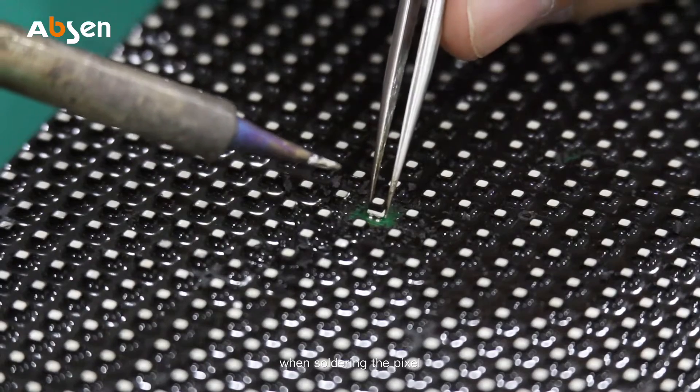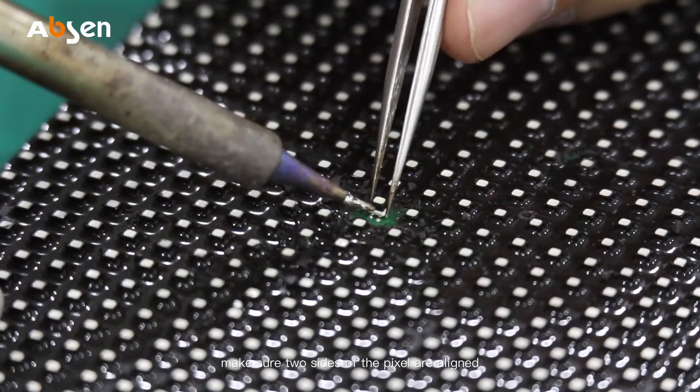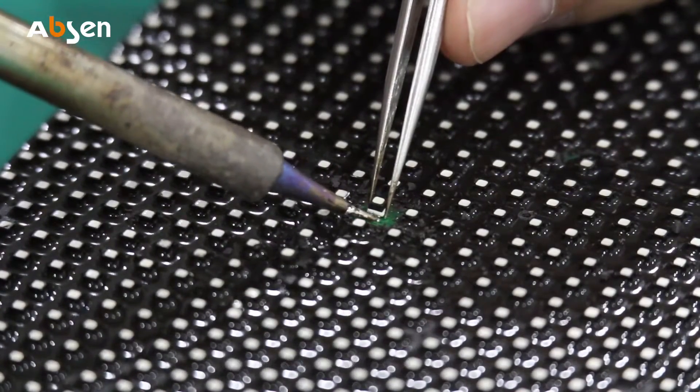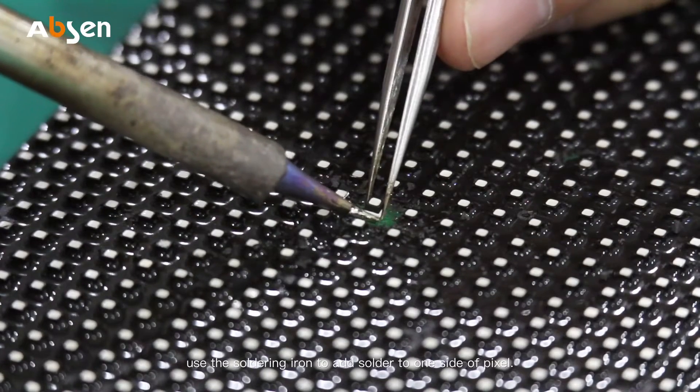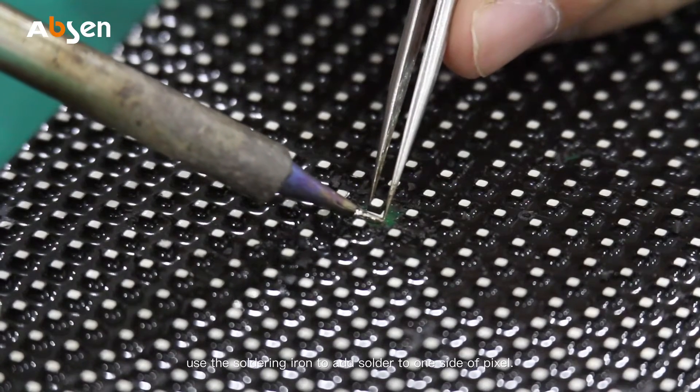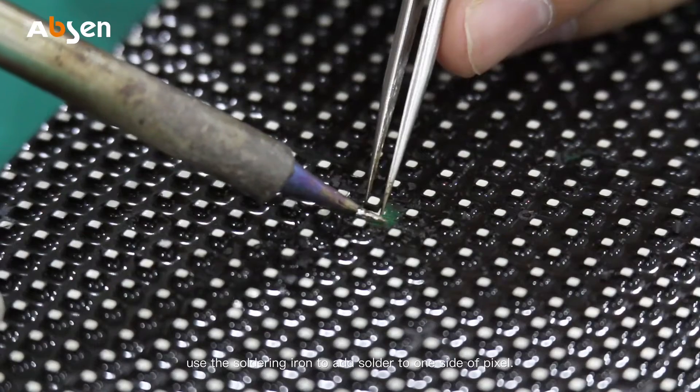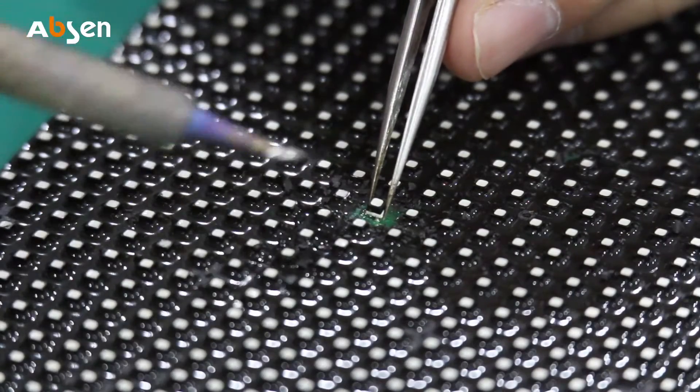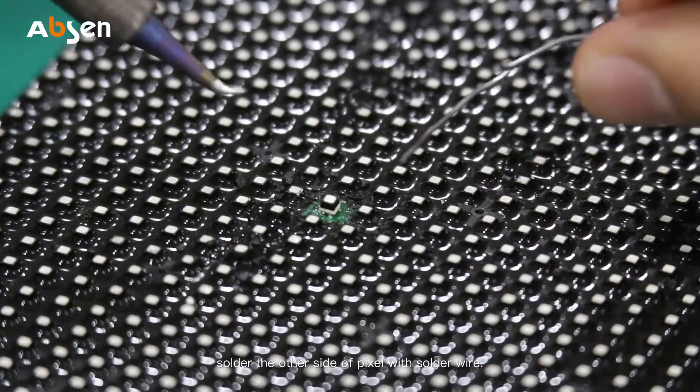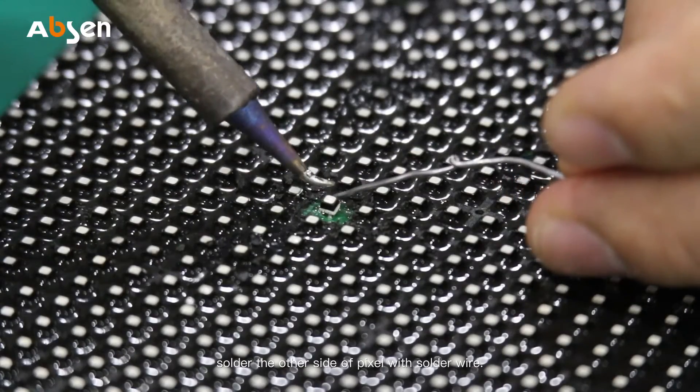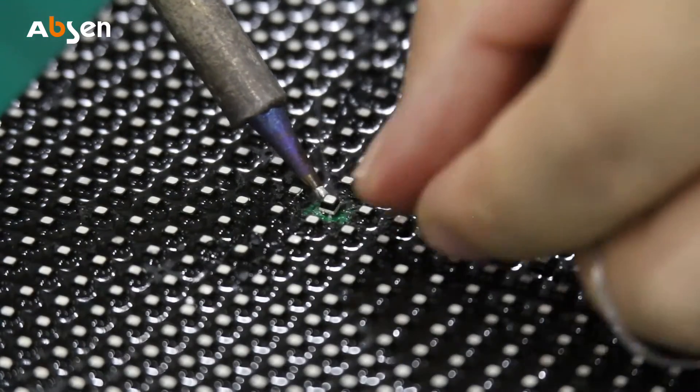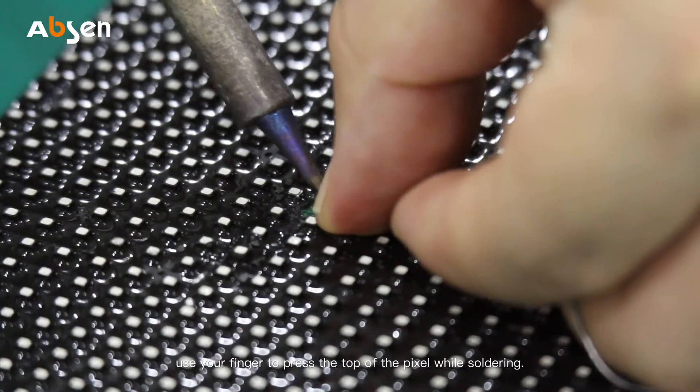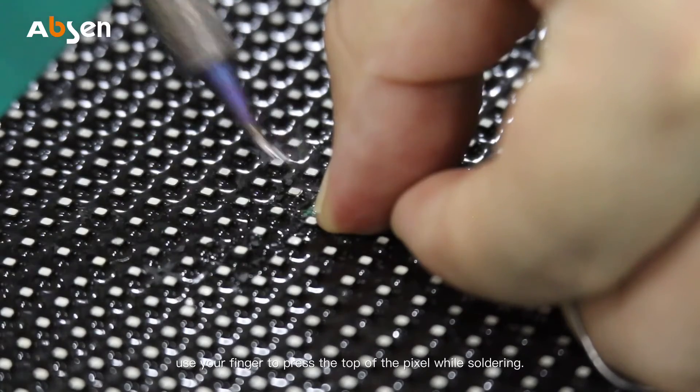When soldering the pixel, make sure two sides of the pixel are aligned. Use the soldering iron to add solder to one side of the pixel. Solder the other side with solder wire. Use your finger to press the top of the pixel while soldering.